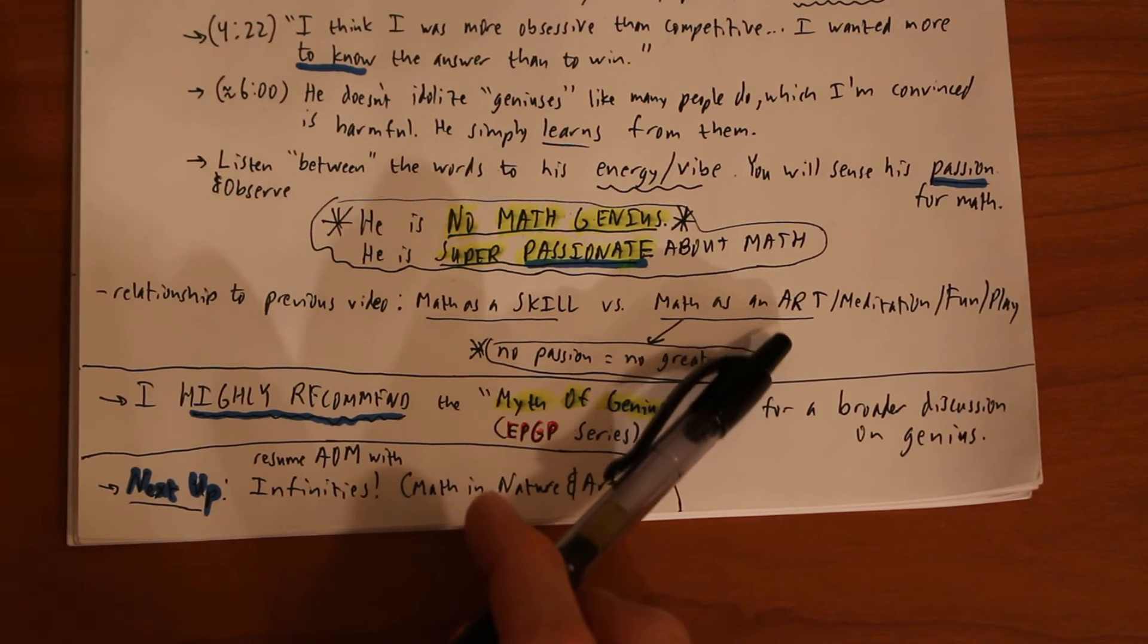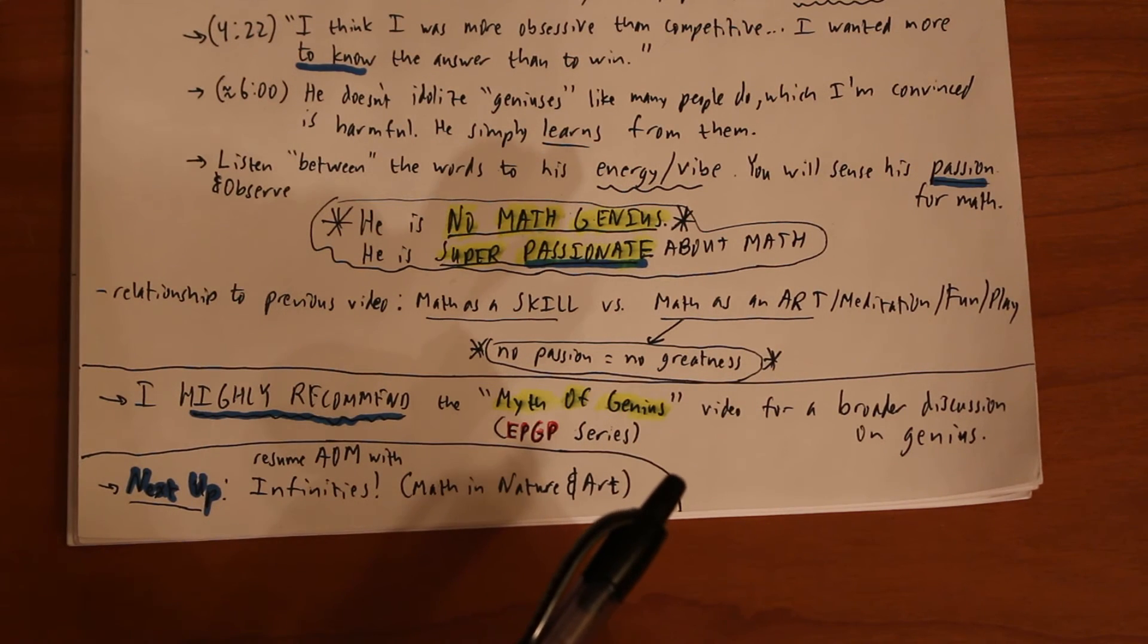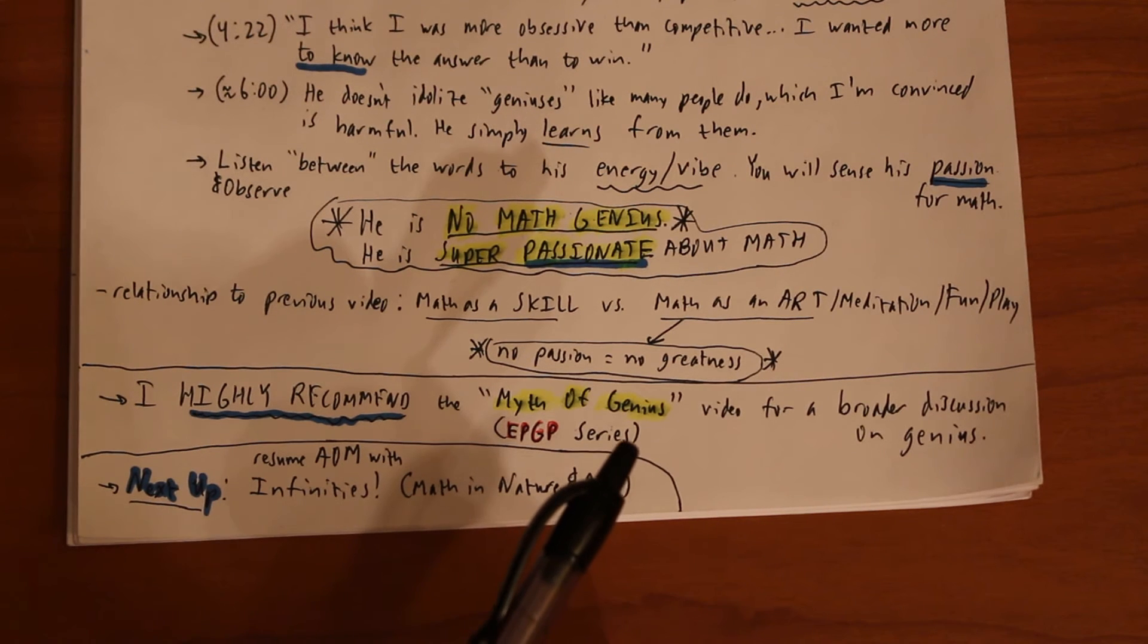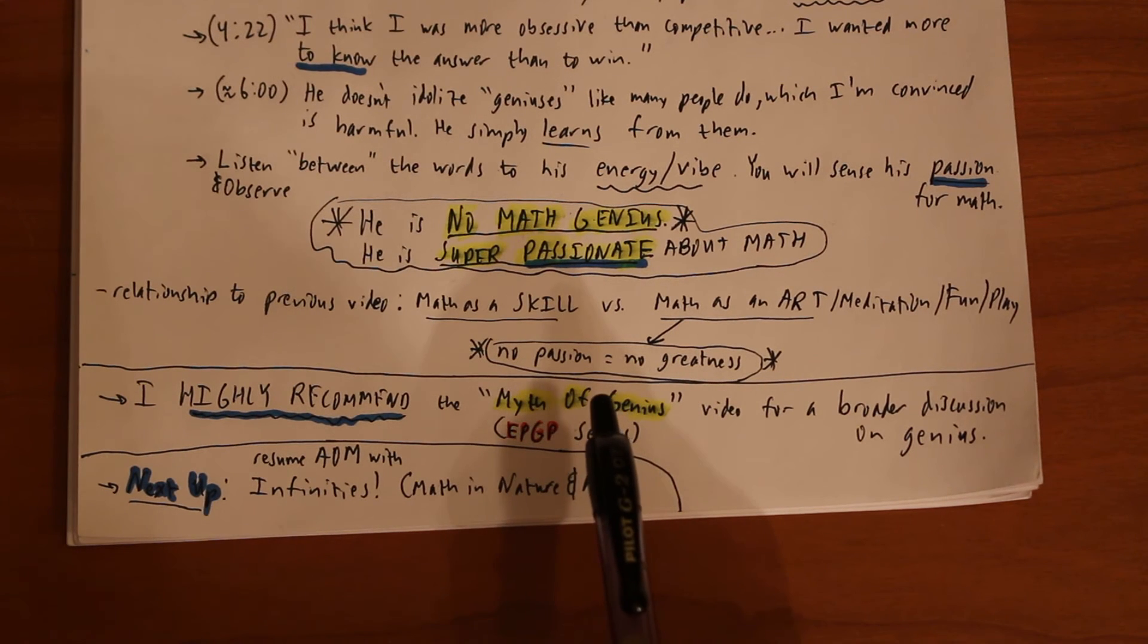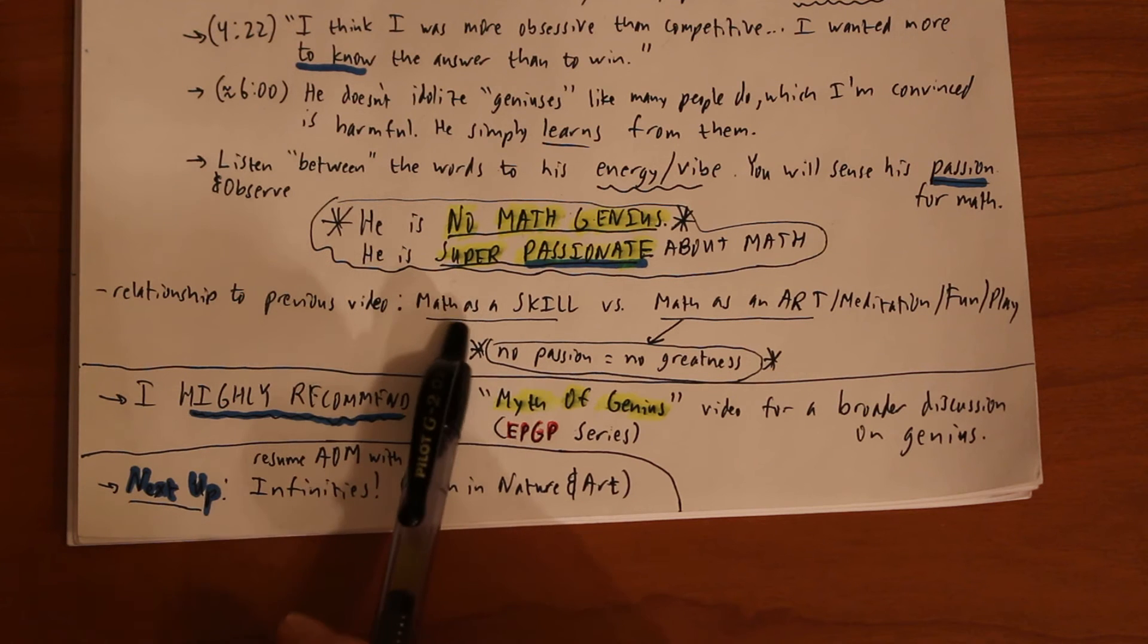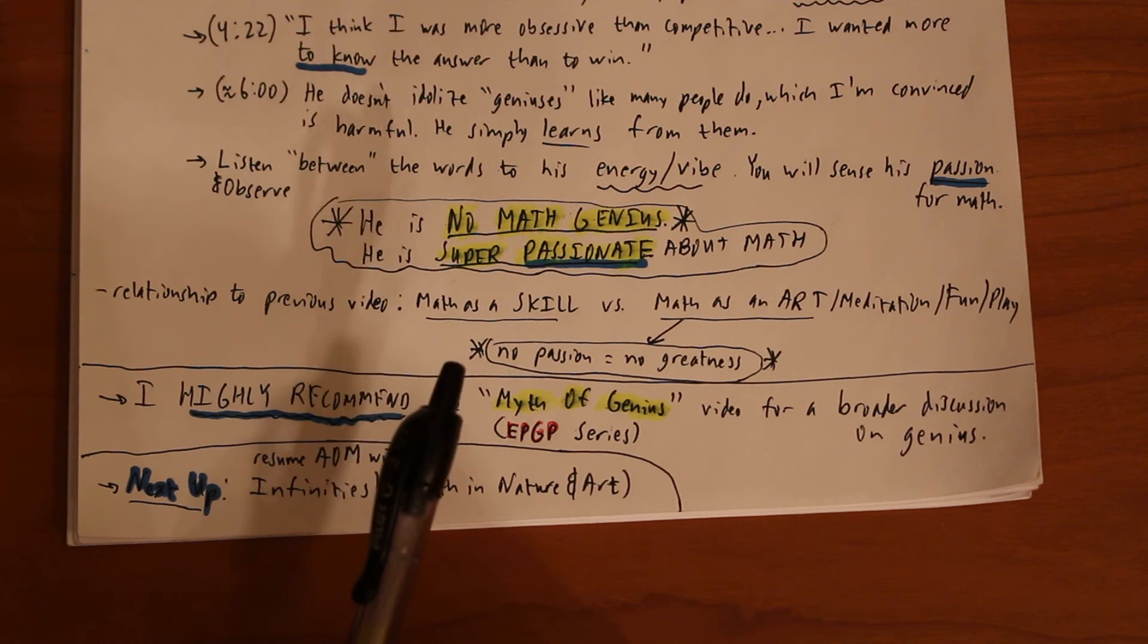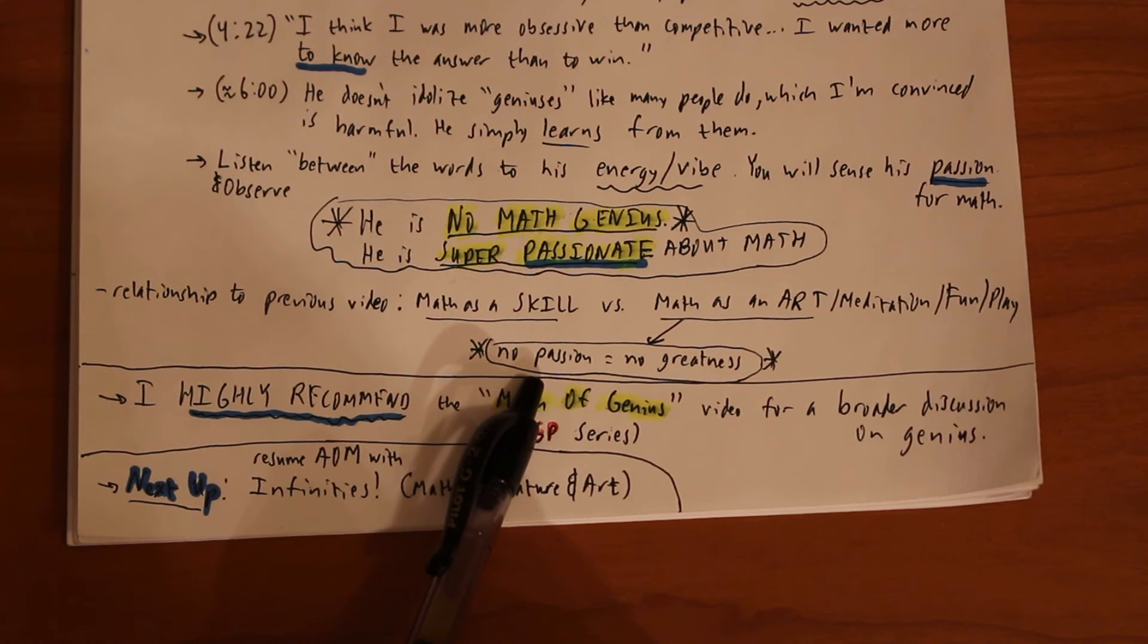versus math as an art, we discussed both takes on it and I really want to hammer home this point which is: if you ever want to get great at something, if you ever want to be super great and you're just going to view math as a skill or any other subject, you will never get great. If you don't have any interest or passion, you're just good at something or you just know the skills...